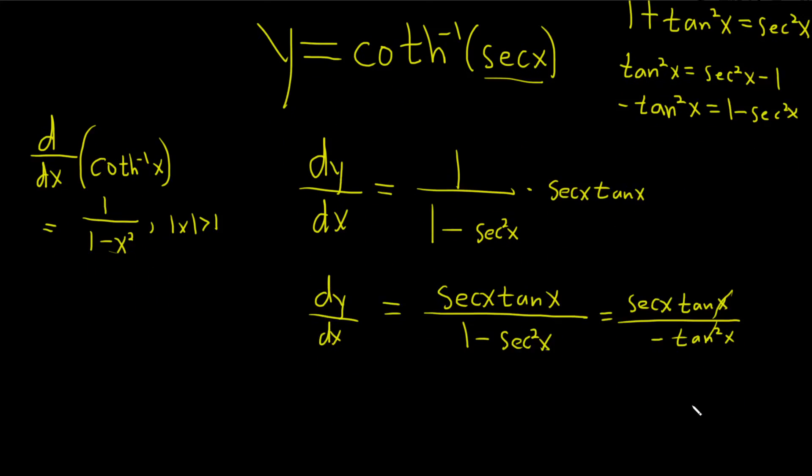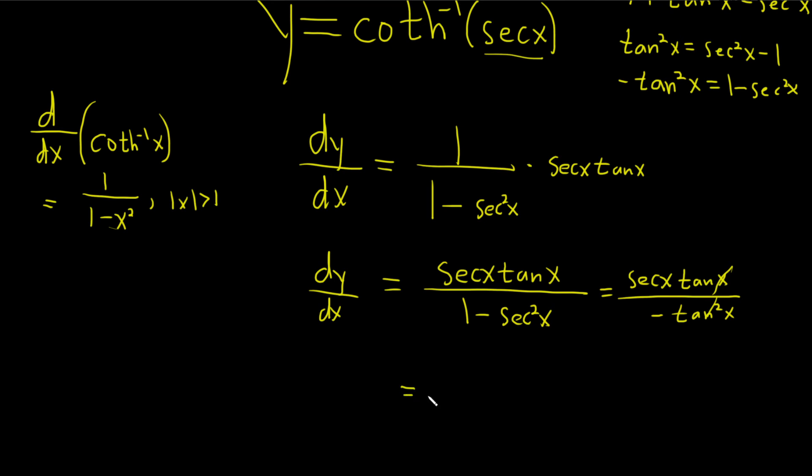We lose a tangent here, so this is going to be, let's see, negative secant x over tangent x. And we can stop here, or we can try to keep simplifying. Let's keep going. See what happens, just for fun.